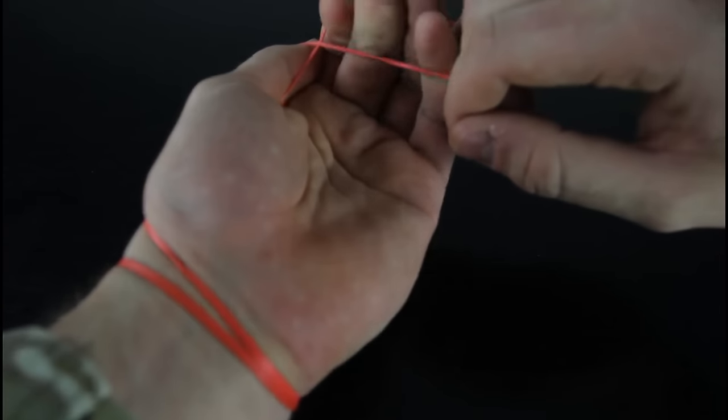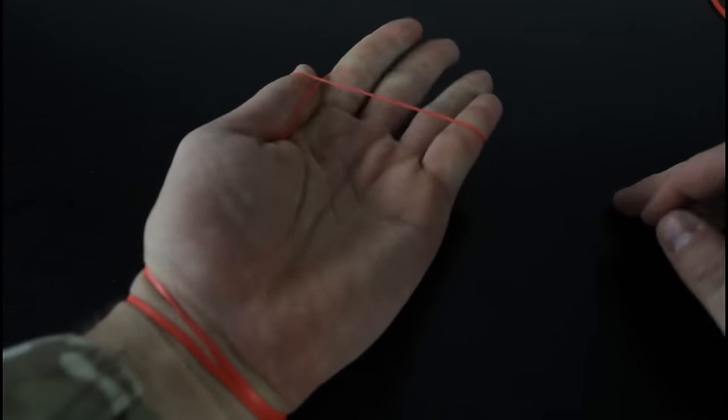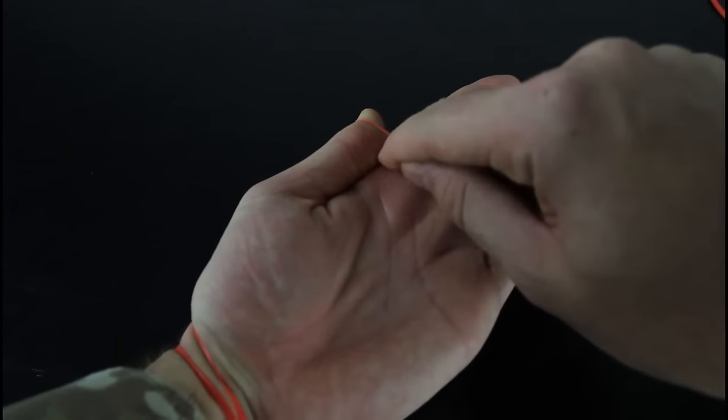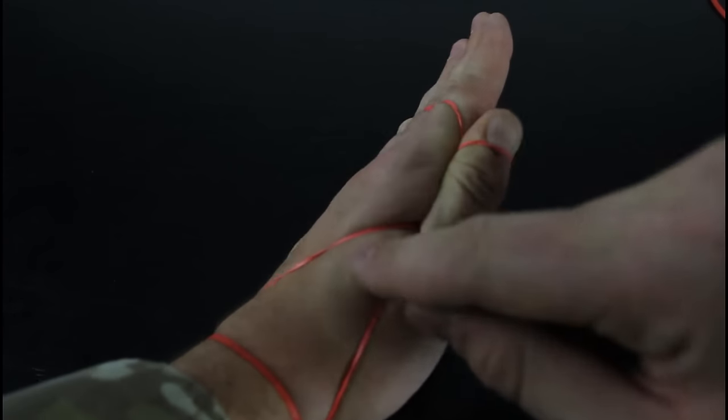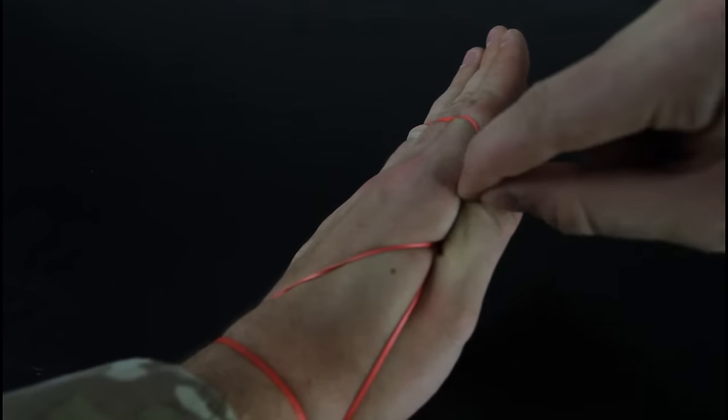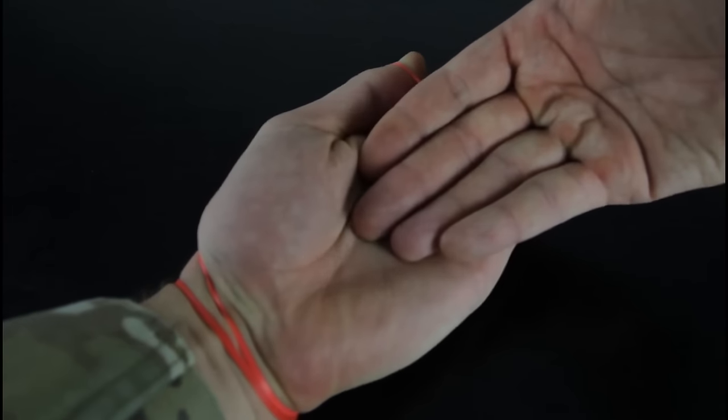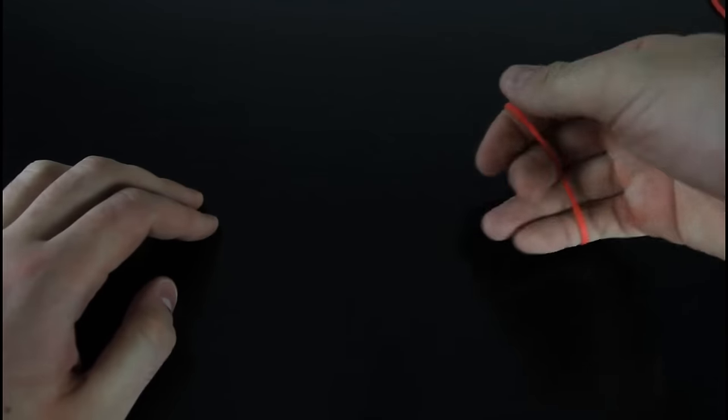Then put all your fingers in there, open them so this rubber band will stick under this way. The rubber band, you see how it goes, and when you let go it jumps on your hand.